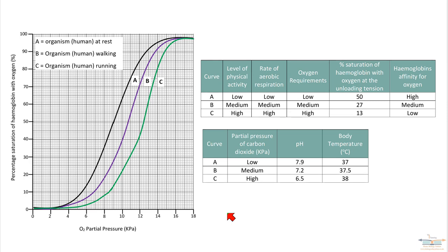If we go to this top table, there's the physical activity: low, medium, and high for A, B, and C. Rate of aerobic respiration: low, medium, and high. Oxygen requirement: low, medium, and high. And percentage saturation of hemoglobin with oxygen at the unloading tension. Remember now, the unloading tension is what causes 50% saturation. If you look at that for curve A...